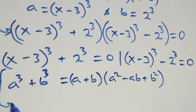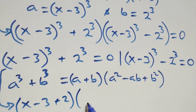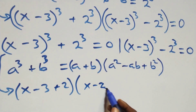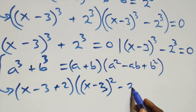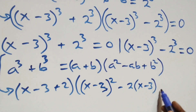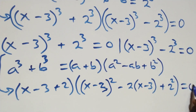Then, all we have here, follow this and it becomes: x minus 3, plus 2, into brackets, then open brackets. Here x minus 3 is serving as a, then all square, minus 2 times x minus 3, then plus 2 square, close brackets, equals to 0 here.